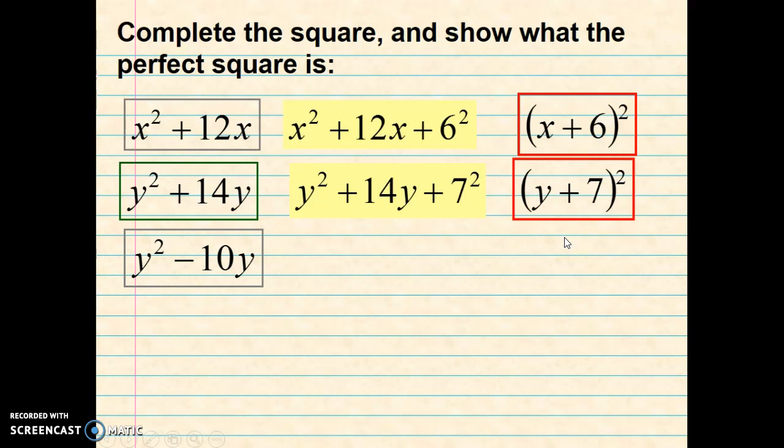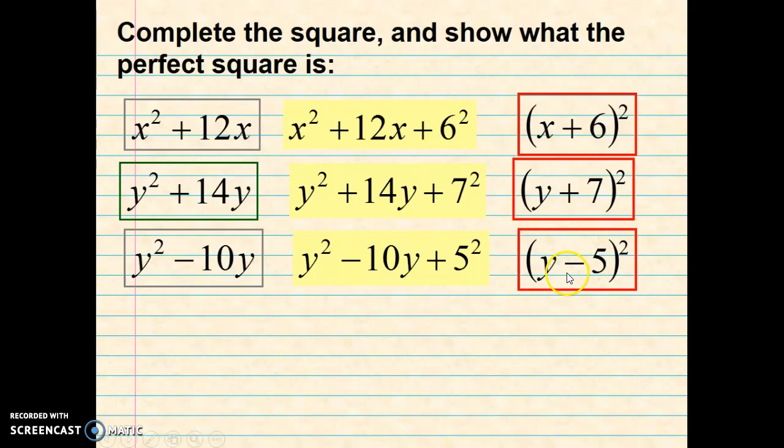Okay, moving on to our third example: y squared minus 10y. So what are we going to add to the end? If you said plus 5 squared, you would be correct, because half of 10 is 5 and we square that and add it to the end. Okay, what is the binomial factor? Hopefully you said y minus 5 squared, because the minus sign now follows the B term and half of 10 would be 5.